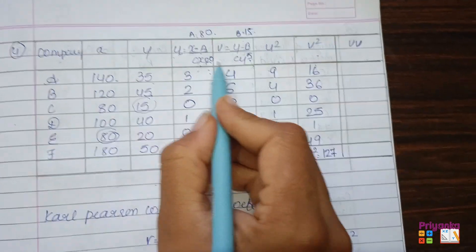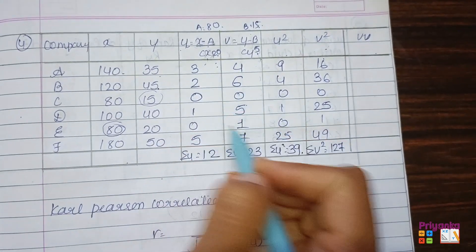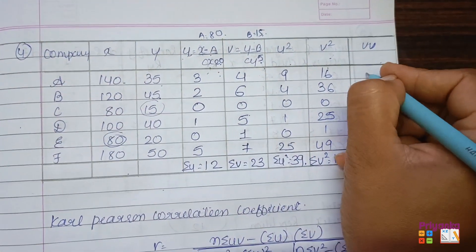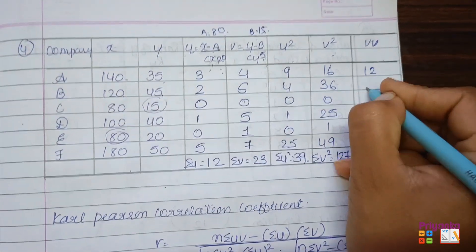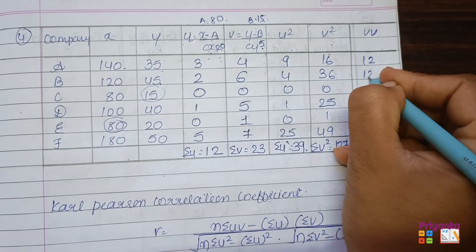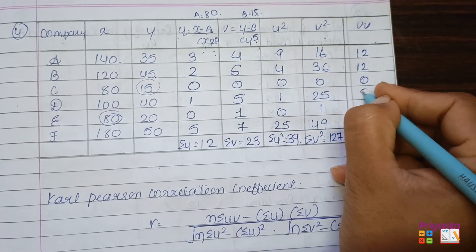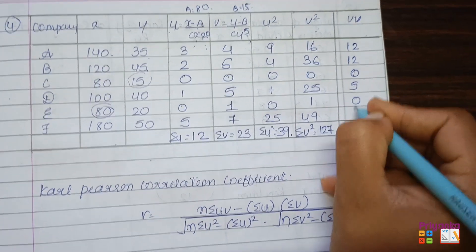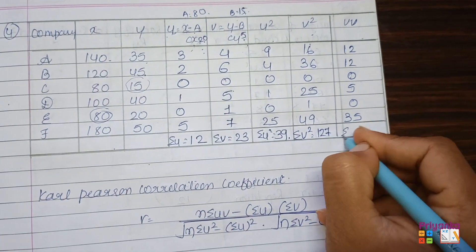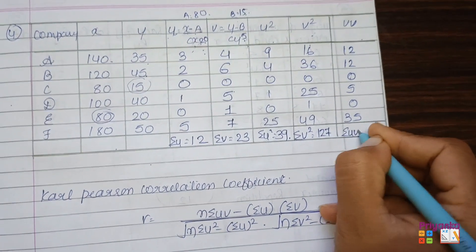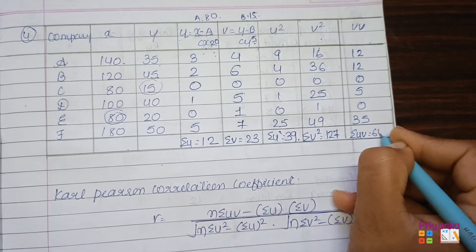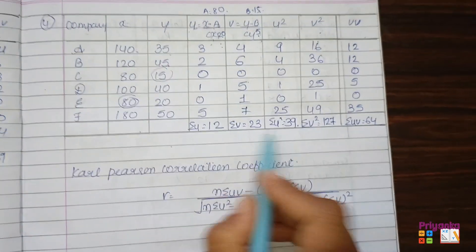UV — the multiplication of corresponding u and v values: 12, 12, 0, 5, 0, 35. The total of sigma uv is 64.